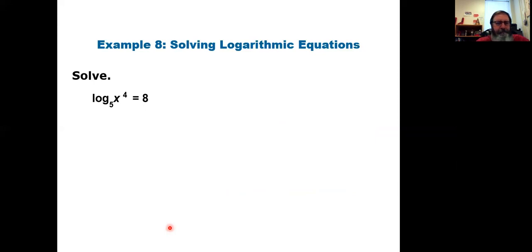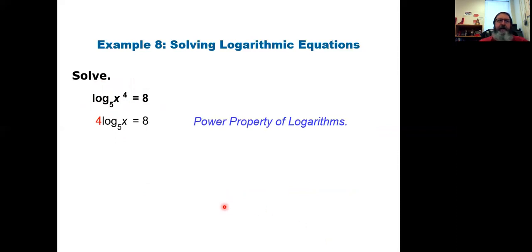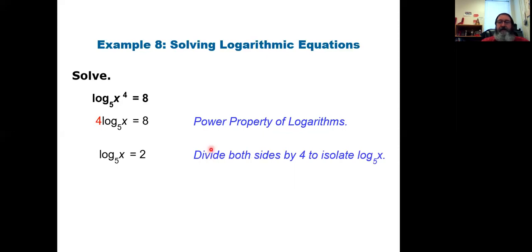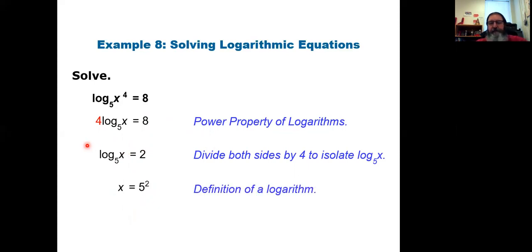Another example: log base 5 of x to the power of 4 equals 8. Using the power property, I move the exponent 4 to the front: 4 times log base 5 of x equals 8. Dividing both sides by 4 gives log base 5 of x equals 2. Using the definition of a logarithm, that means 5 squared equals x. So x equals 25.